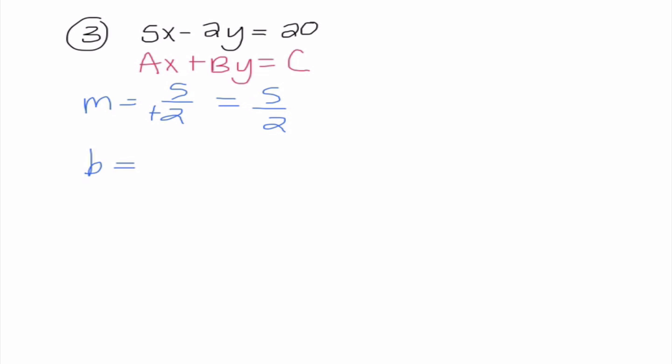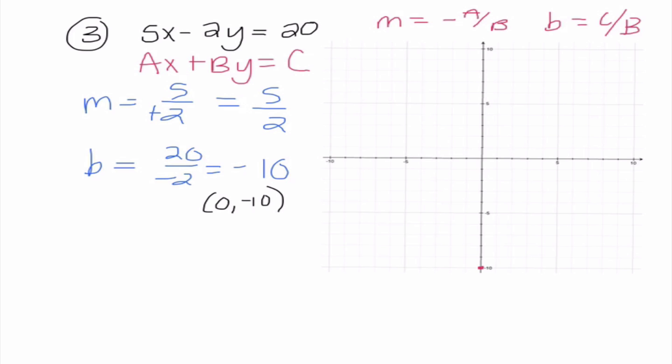Our y-intercept is c over b. So, I have 20 over negative 2, which is negative 10. So, the key thing with using standard form is knowing the memorization on how to find the slope and the y-intercept, which I wrote out on top here again. So, the slope is the opposite of a over b. The y-intercept is c over b. So, the way that, once we get to this point, it's identical to 1 and 2, so we're going to go ahead and graph it. So, this time, our y-intercept is negative 10, so that's an ordered pair of 0, negative 10. Our slope is up 5 to the right 2, and I'm going to continue that. And then I'm going to connect these points with a straight line.